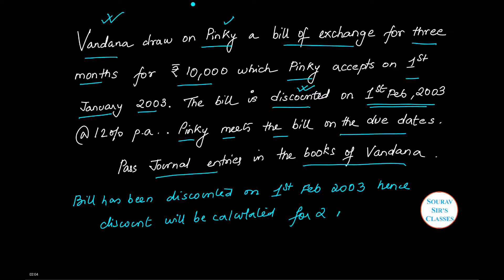Discount will be calculated for two months only. So what will be the amount of discount? Discount will be ₹10,000, the worth of the bill, into 12%, and two months, so it will be 2 by 12, and this will be ₹200.